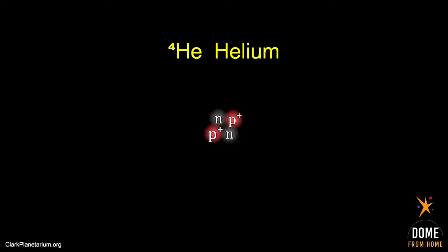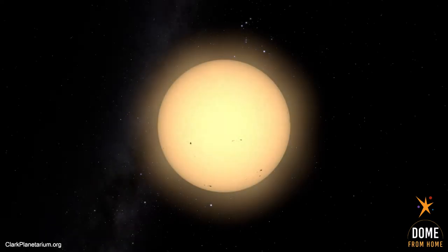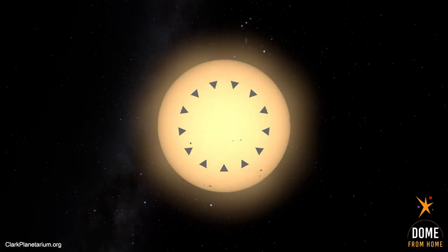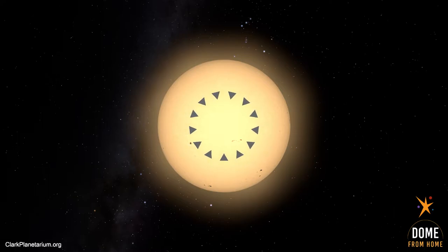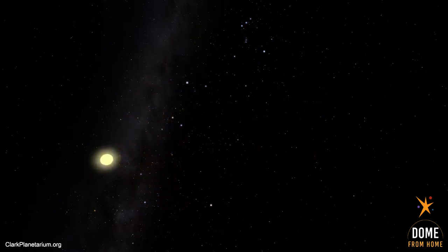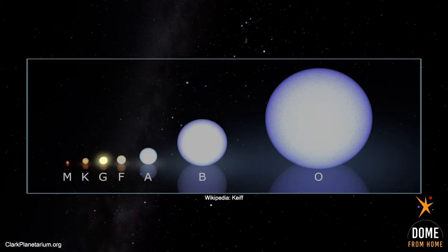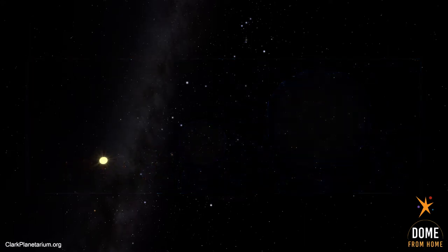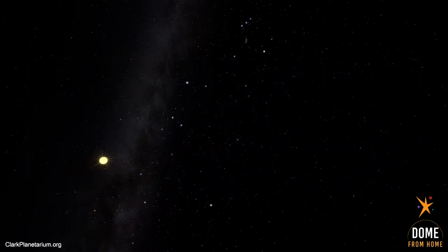Stars balance between outward and inward forces. Gravity is always pulling inward, while the fusion reaction is always exploding outward. Stars come in many sizes. Our star, the Sun, is a medium-sized star — not the biggest or the smallest. Stars with less mass have less gravity pulling inward, which affects how they live and eventually die.